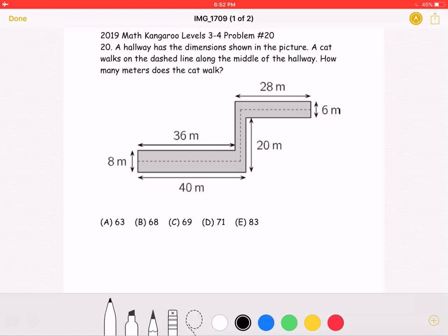This is the 2019 Math Kangaroo Levels 3-4, Problem Number 20. A hallway has the dimensions shown in the picture. A cat walks along the dashed line along the middle of the hallway. How many meters does the cat walk?